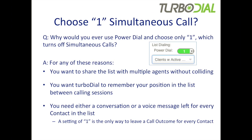You can choose anywhere from one to four simultaneous calls in PowerDial. Why would you ever choose one? Well, if you want to share the list with multiple agents, you've got to use PowerDial — standard list dialing won't share the list and agents may collide. You also need PowerDial if you want TurboDial to remember your position in the list between calling sessions. And if you need either a conversation or a voicemail — some sort of touch for every contact — then a setting of one is the only way to ensure you touch every contact. With more than one, there will be contacts who are attempted but never actually touched.